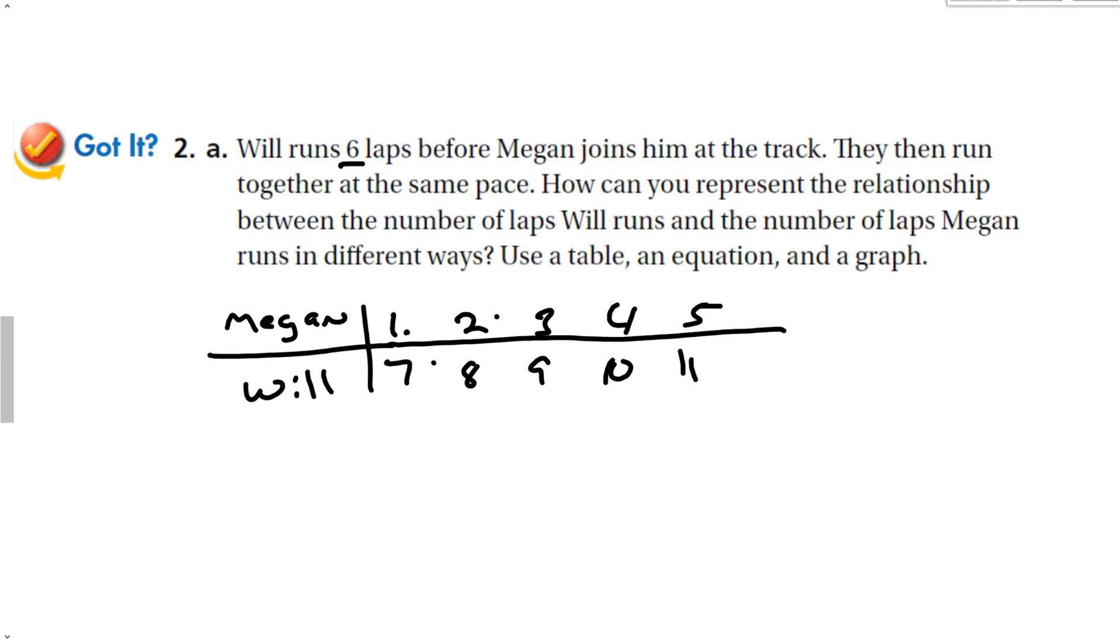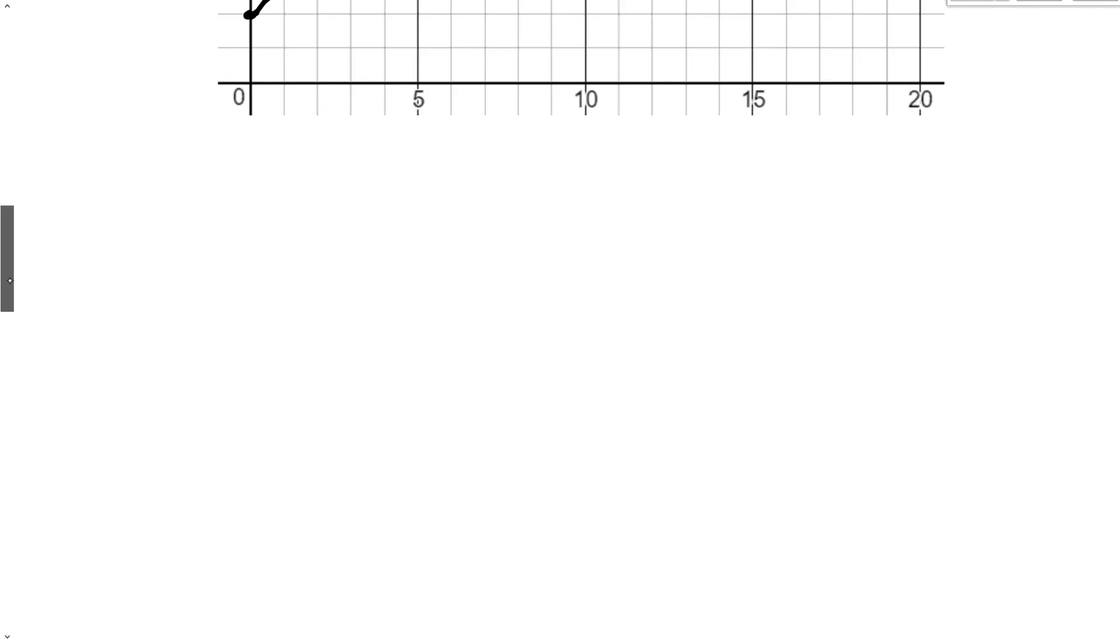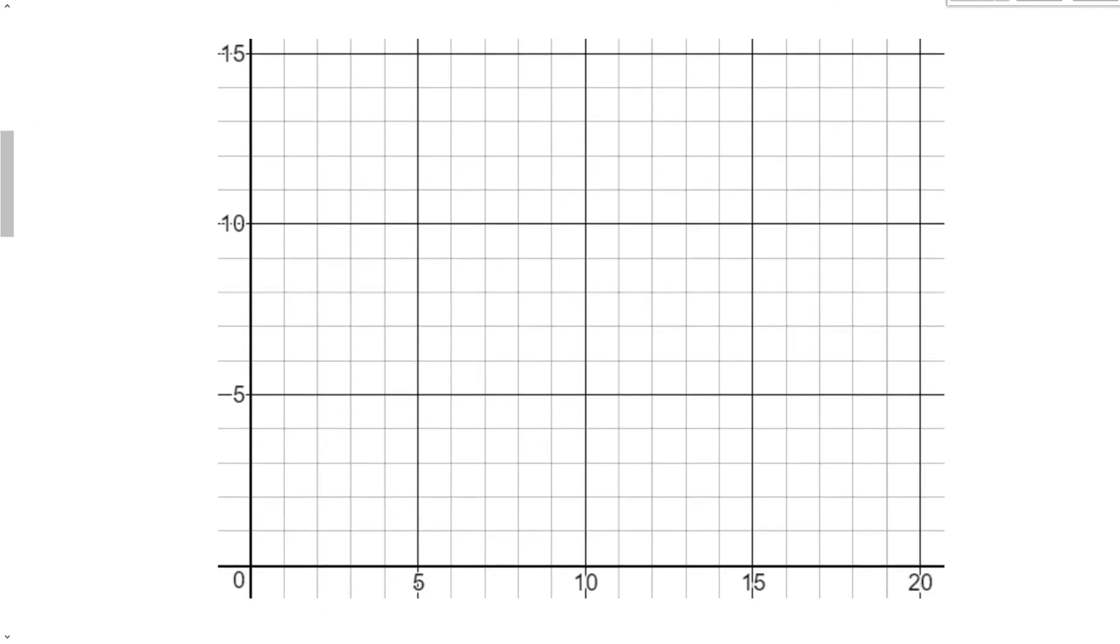And to get from one point to the other point, if Megan is X and Will is Y, to get the number of laps that Will is running, we take X plus six. And then of course, I could use the same graph from up here. Instead of starting at two, like for Carrie and Kim's ages, we're now going to start at six. And I'm going to get the same sort of relationship that I had before. It's just my line is now going to start in a different spot.